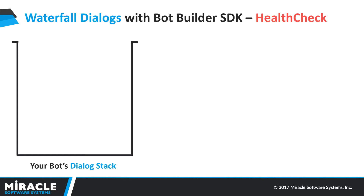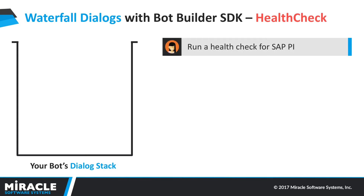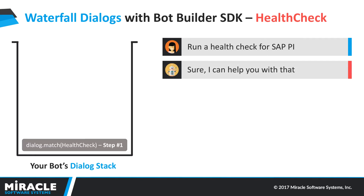Let's go ahead and start off our waterfall dialog. The first step would be the user asking to run a health check on a particular system — in this case, SAP PI. The first thing that happens is that the dialog.match for the health check intent would be kicked off. Step one of that handler would be started, and it would immediately respond back saying, sure, I can help you with that, and would then remove itself off the stack.